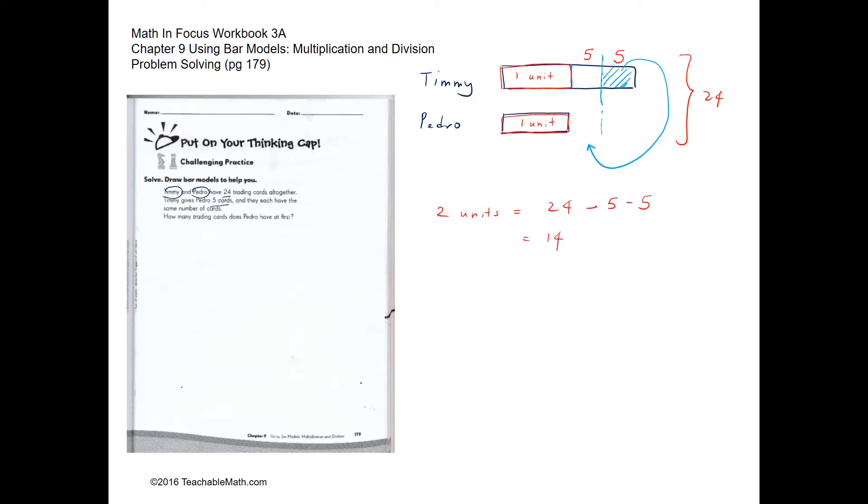Which is 14. So how do we get the equation again? We have one unit here and one unit here, and this is equivalent to 24 take away the extra, which is 5 and 5.